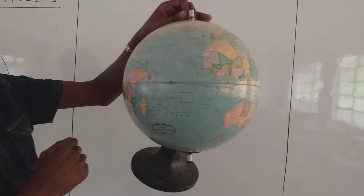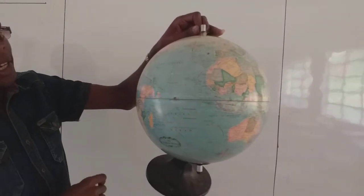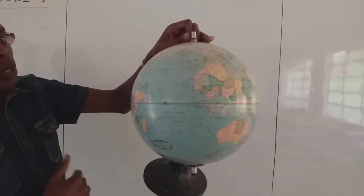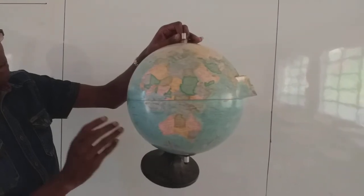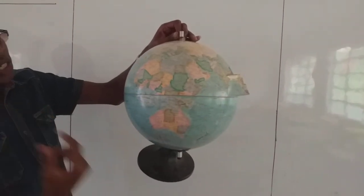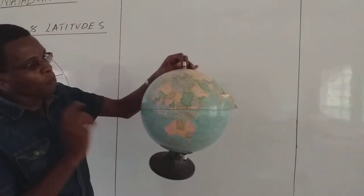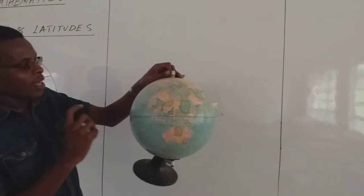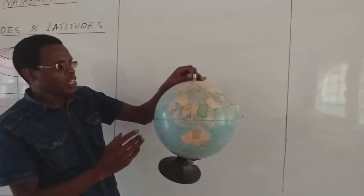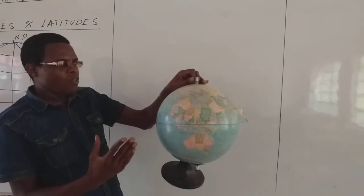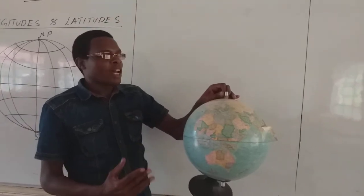The equator is a special latitude which we are going to classify under the Great Circle. We are going to cover that when the time comes for distinguishing between the Great Circle and the Small Circle. But for now, the only thing I want you to know is the difference between a longitude and a latitude.